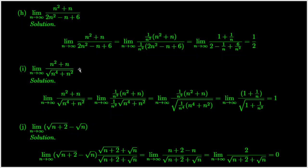We now work on question 5i. We have seen the technique when we evaluate the limit of a function at infinity: divide the numerator and the denominator of the sequence by n squared. We can find the limit.